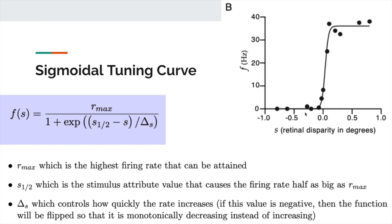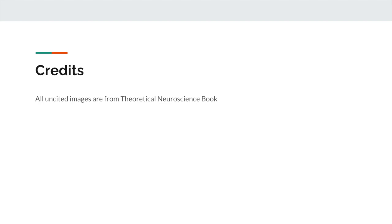These three curves — Gaussian, cosine, and sigmoid — are the main tuning curves used to model most neuron behavior. There are other curves too, but these are the main ones to know. Thank you for watching.